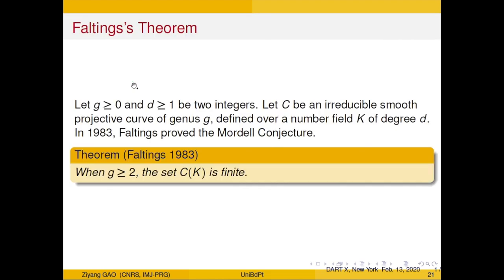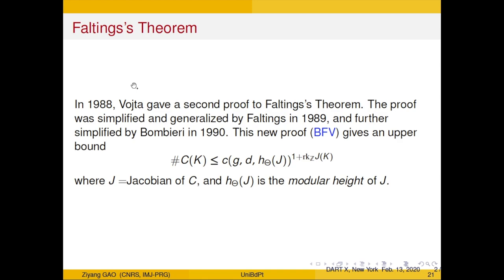Let me start with Faltings' theorem, known as the Mordell conjecture. Fix g and d, two integers. In the whole talk, C will be an irreducible smooth projective curve of genus g defined over a number field of degree d. In 1983, Faltings proved the Mordell conjecture: if g is at least 2, then the curve has only finitely many rational points. The next question is whether there is a bound. This proof itself gives a bound, but it is not a good one. Later, in 1988, Faltings gave a second proof.